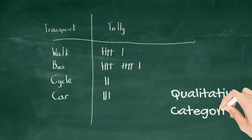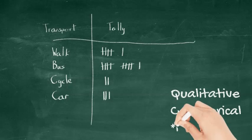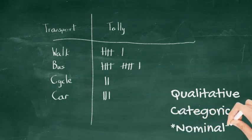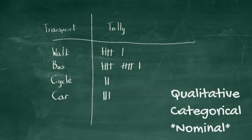This is an example of qualitative data, which is also called categorical data, as the data is in categories. In this case, it is also nominal data as it does not have an order.